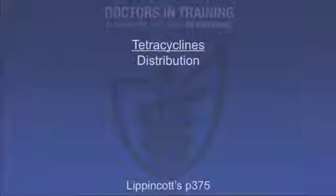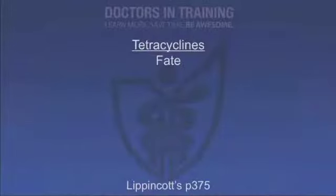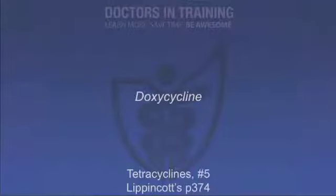For distribution, tetracyclines concentrate in the liver, kidneys, spleen, skin, and importantly the teeth and bones. They bind to tissues undergoing calcification, and tumors with high calcium will also accumulate the drug. They are metabolized in the liver, go through bile excretion, intestinal reabsorption, and end up in the kidneys and urine. Renal dosing is required, and caution is needed in liver failure.